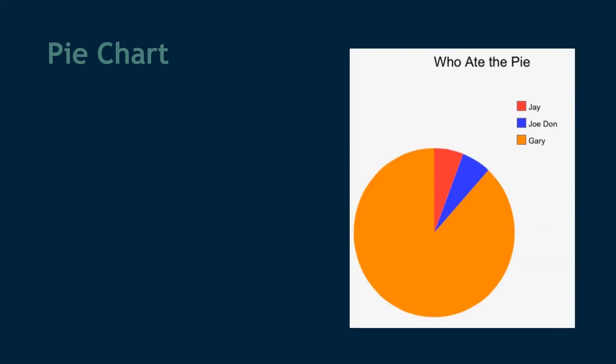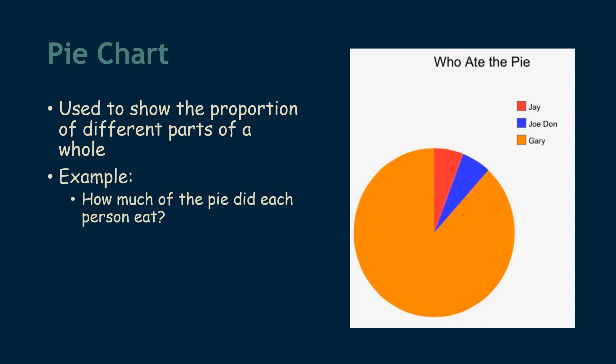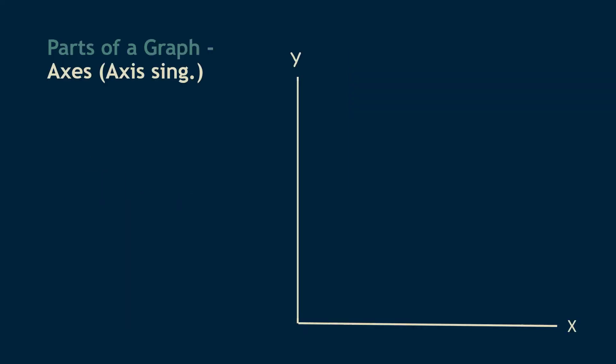The third type of graph we're going to look at is called a pie chart. A pie chart is used to show different proportions of parts of a whole — how much of a whole thing each part makes up. In this case, how much of a pie did each person eat. From this pie chart we can see that Gary definitely ate most of the pie, and Jay and Joe Don just had a little bit.